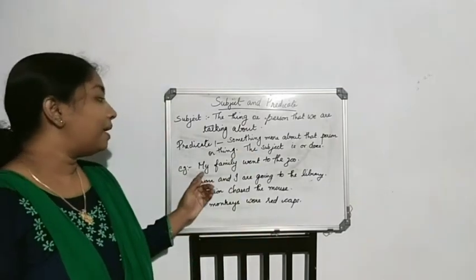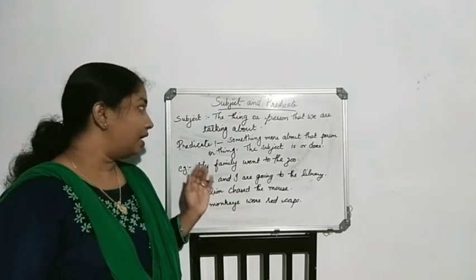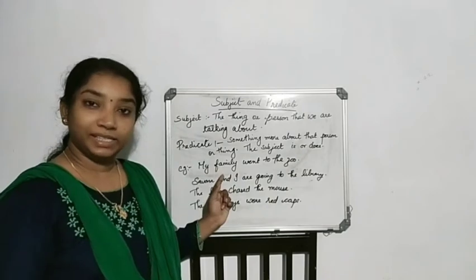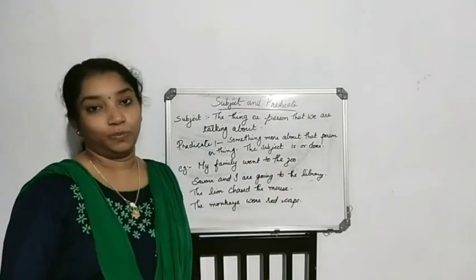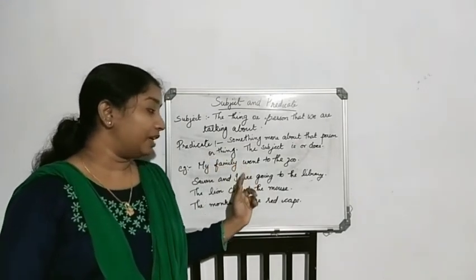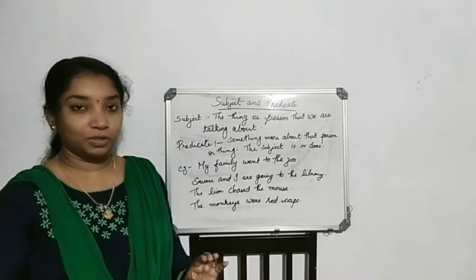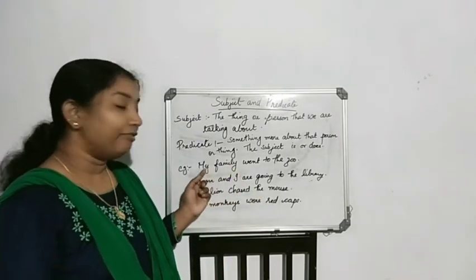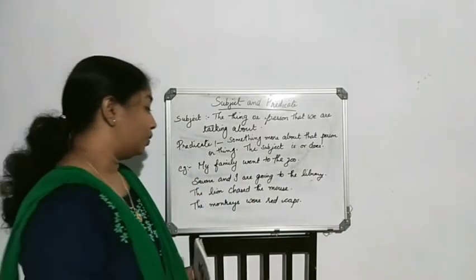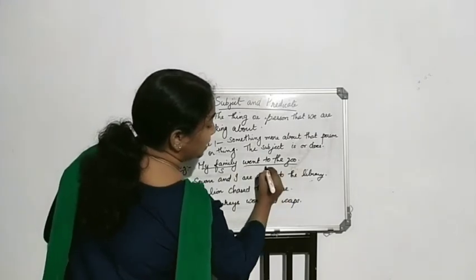For example: 'My family went to the zoo.' Here, we are talking about the family, so 'my family' is the subject. What they are doing — 'went to the zoo' — is the predicate. Went is the verb, so the predicate begins with the verb. My family is the subject and went to the zoo is the predicate.